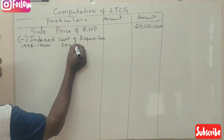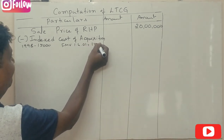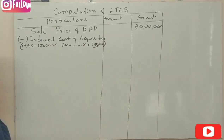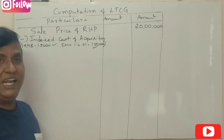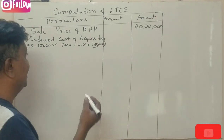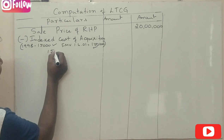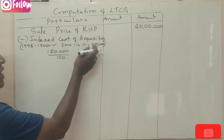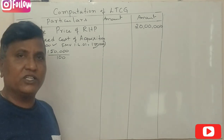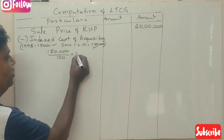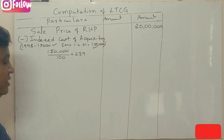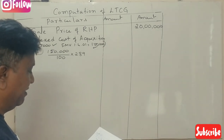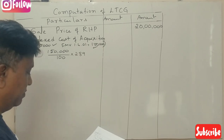The fair market value on 1 April 2001 is Rs. 1,50,000. Since the property was purchased before 2001, we use this FMV as the cost of acquisition. The indexed cost of acquisition is calculated as: 1,50,000 divided by 100 (CII for 2001-02) multiplied by 289 (CII for 2019-20), which gives Rs. 4,33,500.